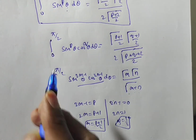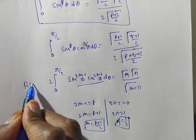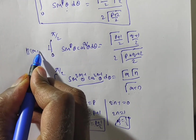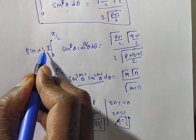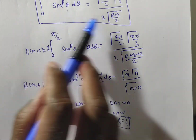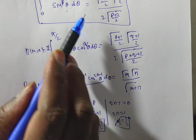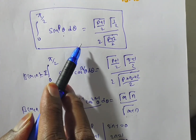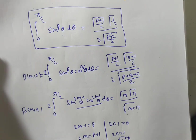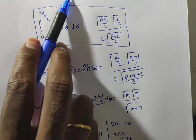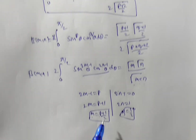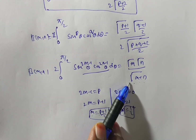But this is 2 times β(m, n). So the full formula becomes: integral from 0 to π/2 of sin^p(θ) dθ = γ((p+1)/2) · γ(1/2) / [2 · γ((p+2)/2)]. This is how you can remember the formula using the beta-gamma relation.